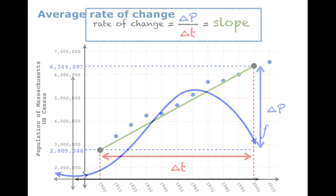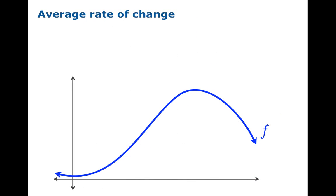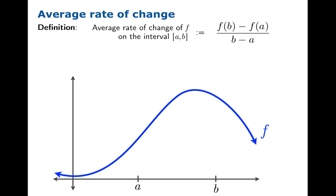Let's see the definition of average rate of change of a function. Here's a nice function and suppose we have this interval. A question we could ask, how does f change on this interval? The average rate of change of f on the interval a to b is defined to equal this quotient f of b minus f of a over b minus a.